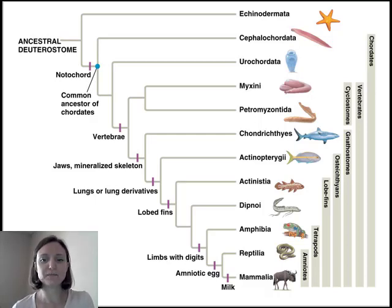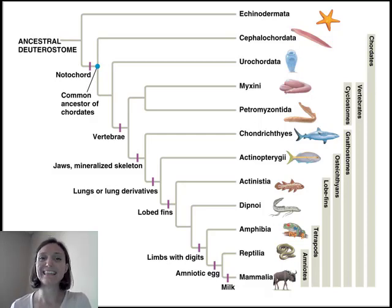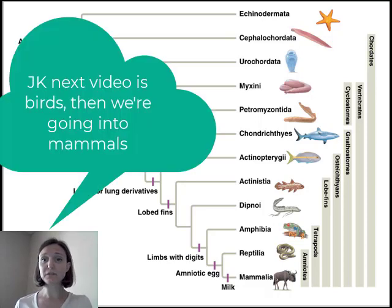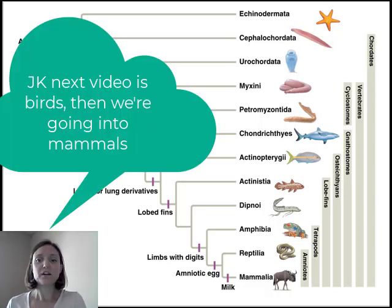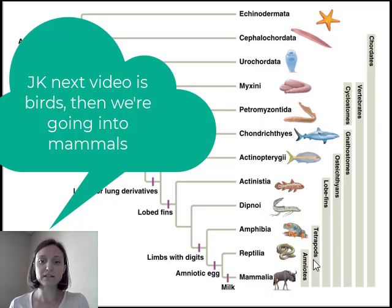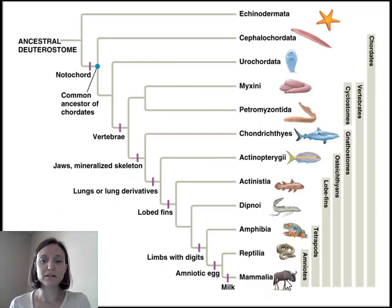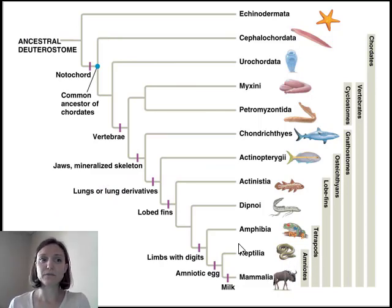Hey team! So we are going to jump into the amniotes and then we're also going to talk about the reptiles. In the next video we're going to hit the mammals and then we are done with animal diversity. We are still in tetrapods, still talking about vertebrates, still in Phylum Chordata, but now I'm going to talk about reptiles and mammals, which include the birds — what we call amniotes.